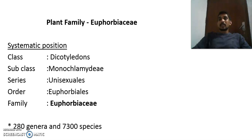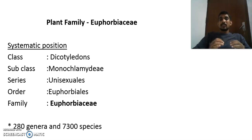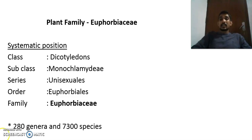When we move into the systematic position of this family, it comes under the class Dicotyledoneae, subclass Monochlamydeae, series Unisexuales, order Euphorbiales, and the family Euphorbiaceae. This is one of the larger families, having approximately 28 genera and 7,300 species.